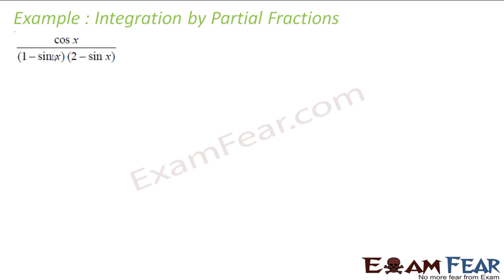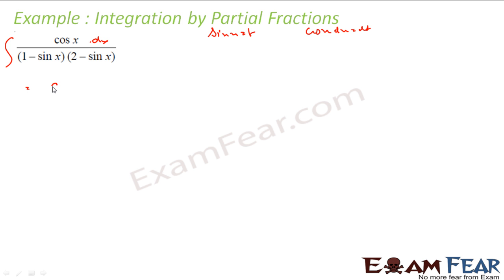Here, if you see, this is sin(x) / ((1 - sin x)(2 - sin x)) dx. One thing I can observe is if I take sin(x) = t, I get cos(x) dx as dt. So this part can be written as dt, and this part can be written as (1 - t)(2 - t).